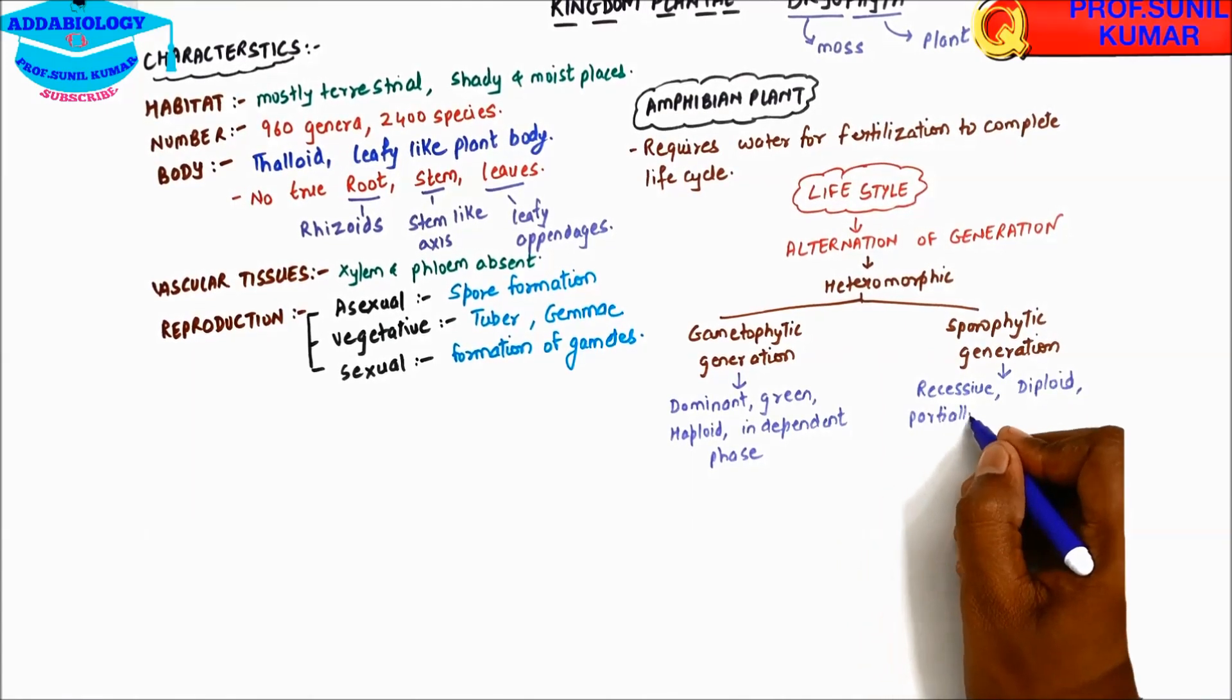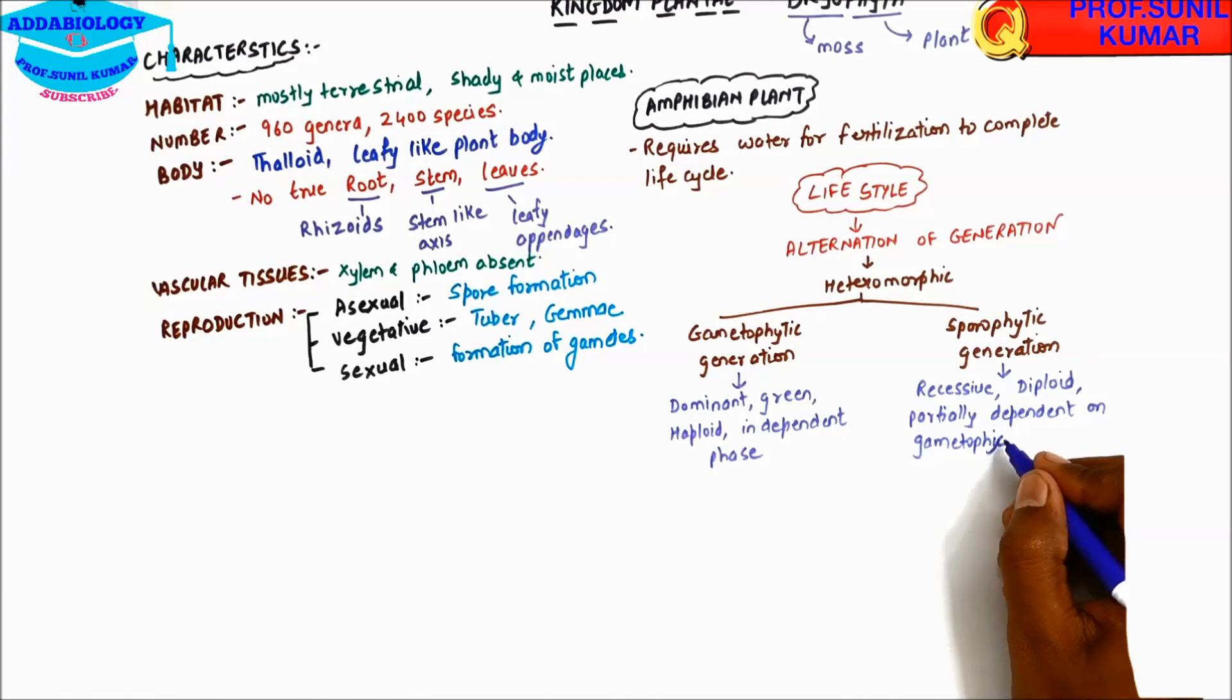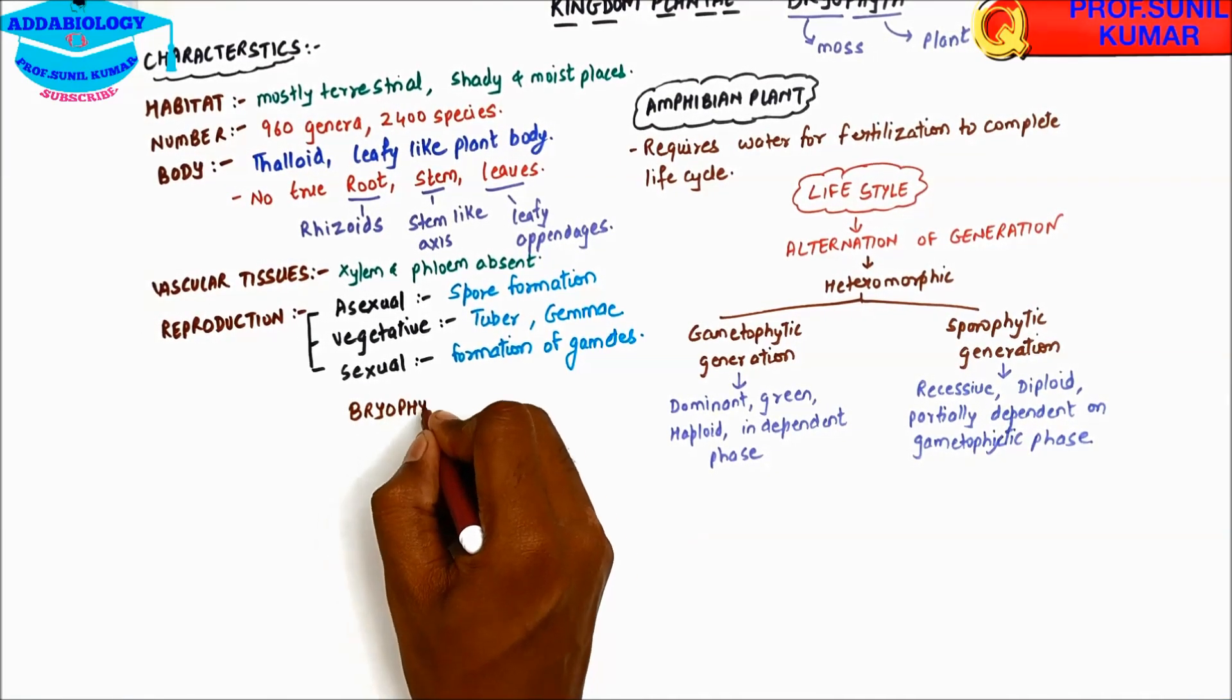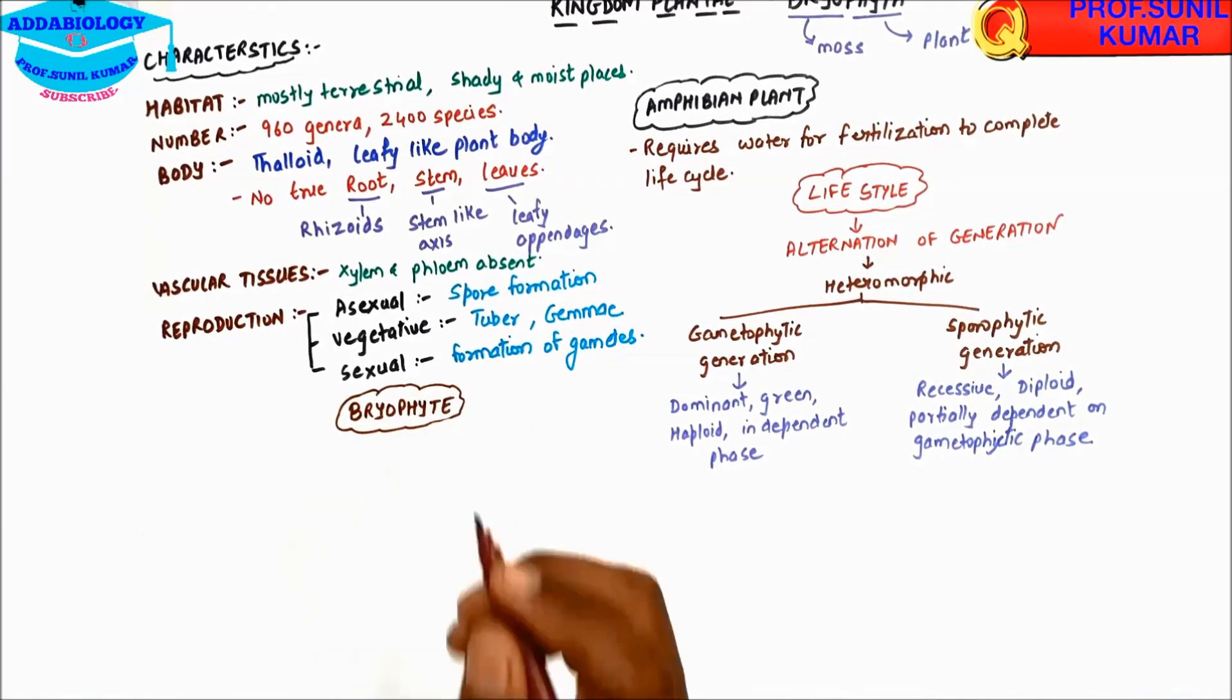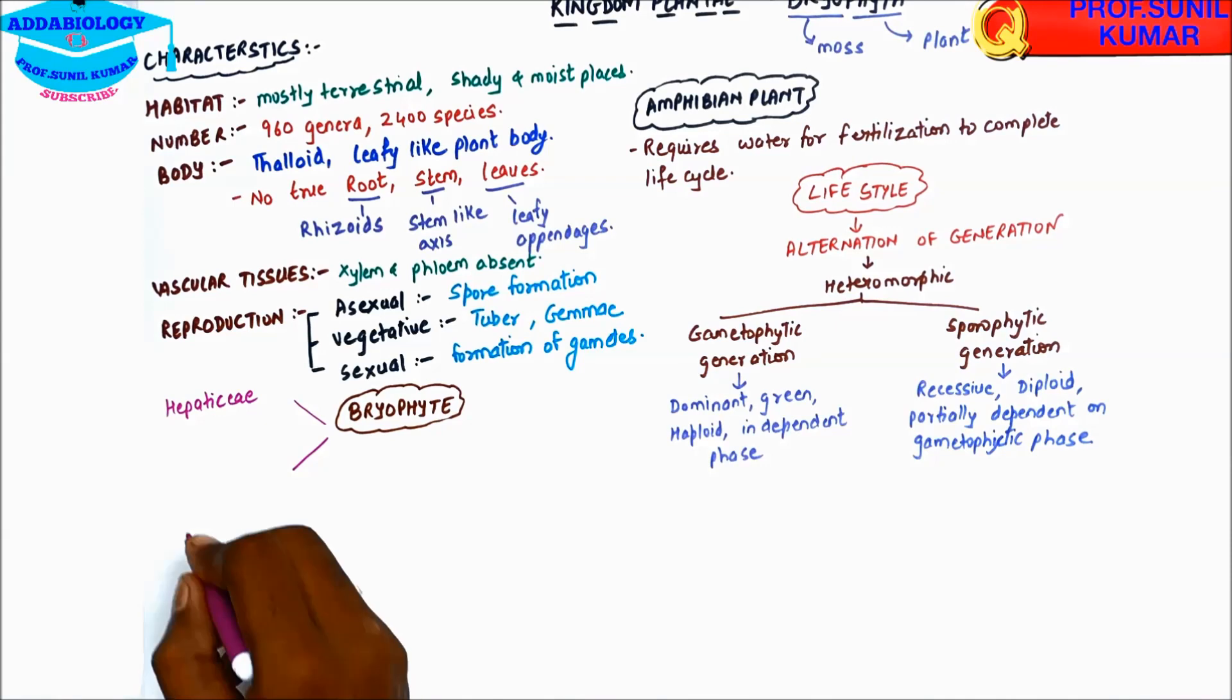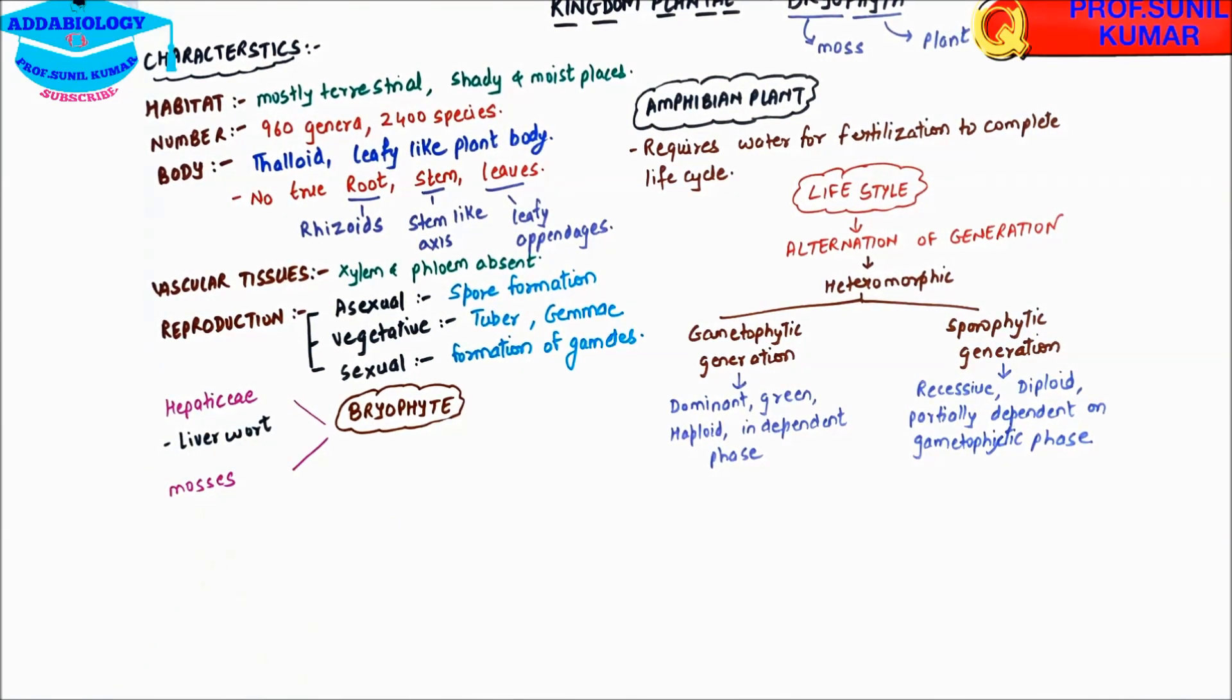Bryophyte includes two groups: Hepaticae and Musci. So bryophytes has two groups, one is called Hepaticae and Musci. Hepaticae includes liverwort and Musci includes Funaria.